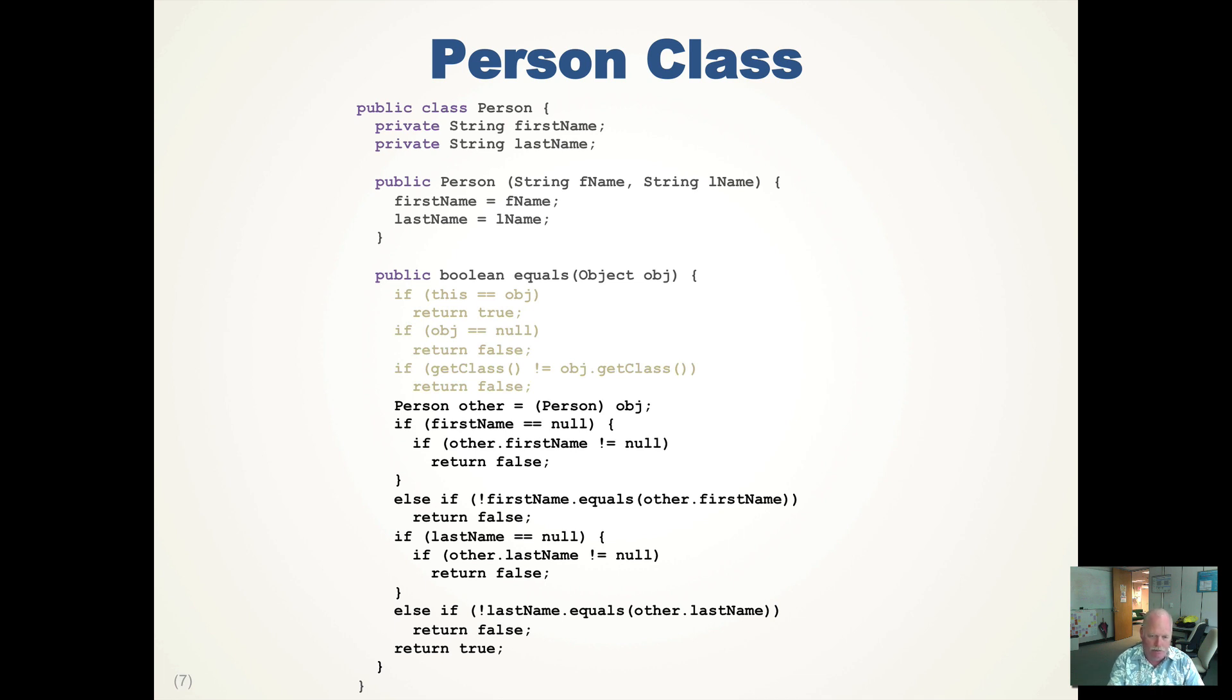So then we check the last name. If our last name is null, their last name must be null. Or we check compare our last name to their last name and we return false or true if all of those things are true. So that's the simple equals operator. We check to see, are we looking at the same thing? Is the other thing null? Then we can check their classes and then we can go out and check their specific things.